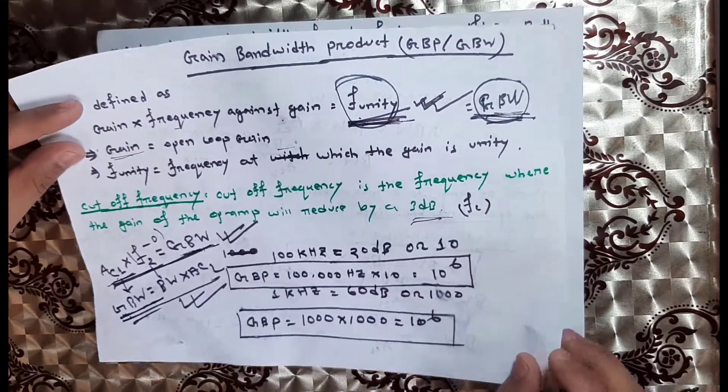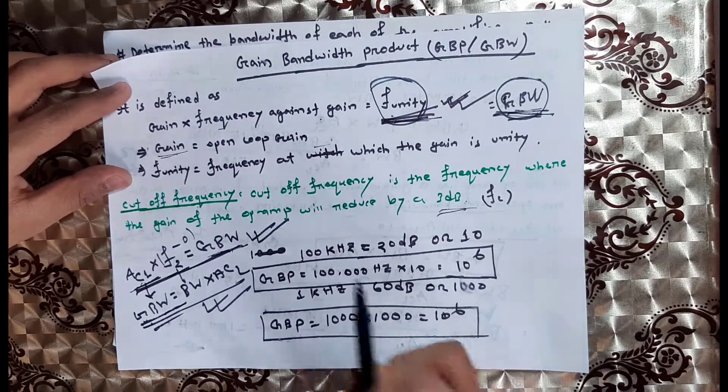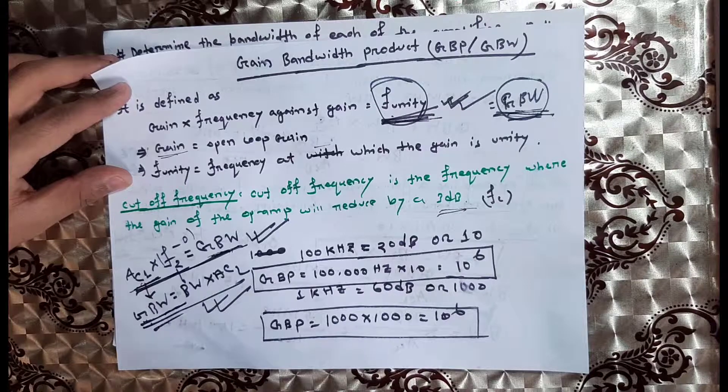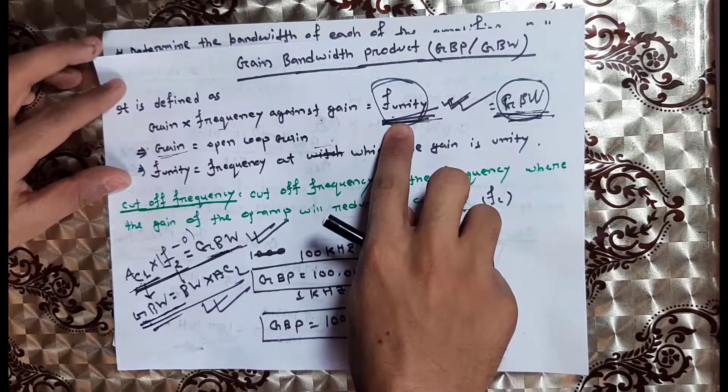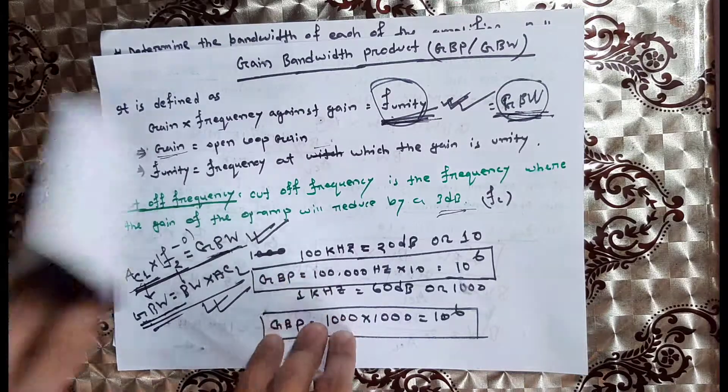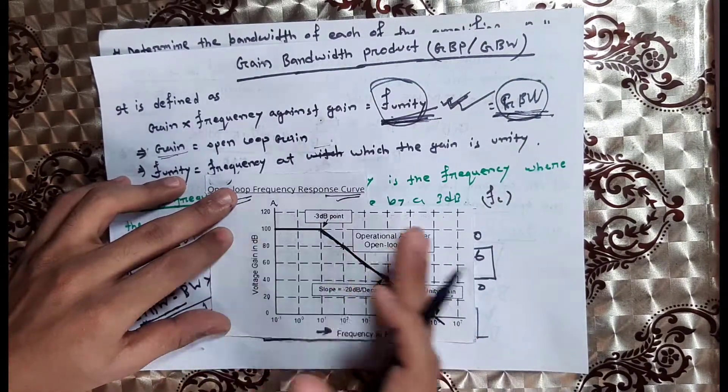We have the gain-bandwidth product concept. Let me show this graphically. We have the gain line, the 3dB point, and the cutoff frequency.